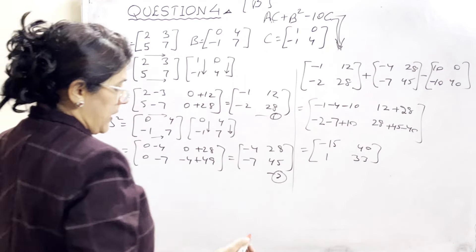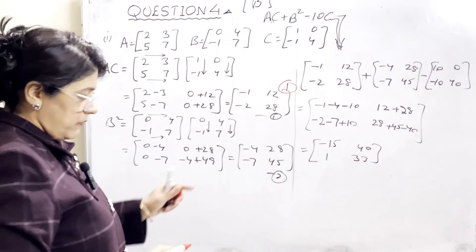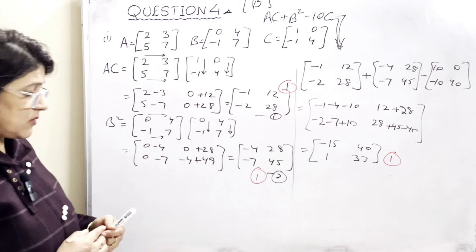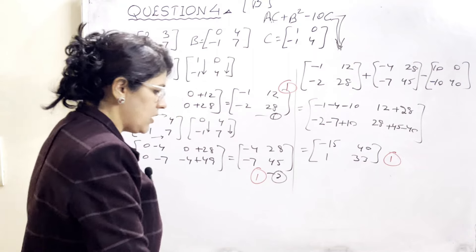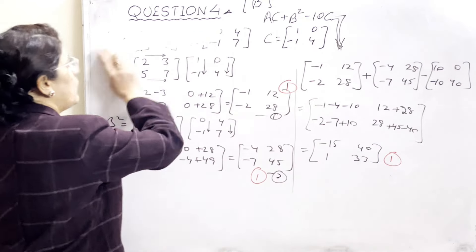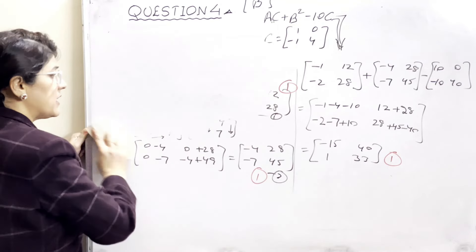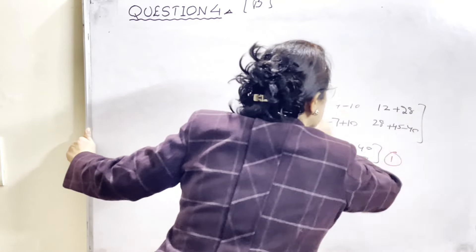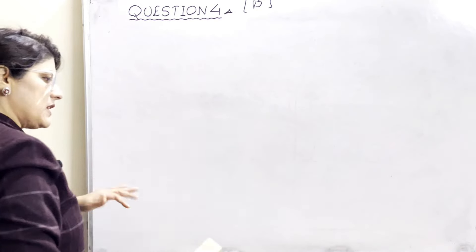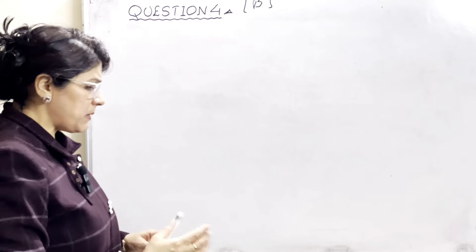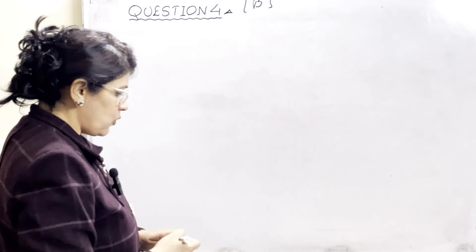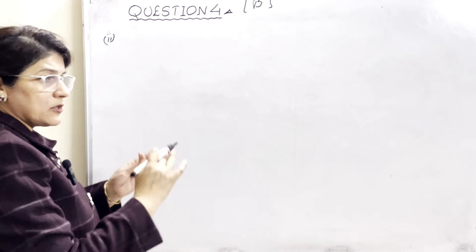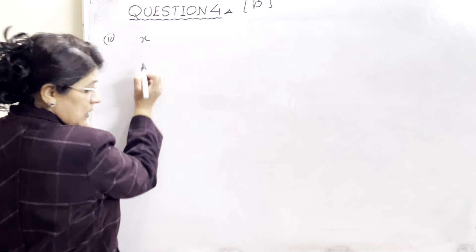Ab Section B mein second part quantity equation mein se liya gaya hai. Ismein aapko two significant figures mein answer dena hai. Two significant figures matlab decimal ke dono taraf ke digits count kar sakte hain. Lekin agar 'correct up to decimal places' kaha ho, toh sirf decimal ke aage wale count karte hain. Is bifurcation ko bahut achhe se samajhna hai, nahi toh poora question sahi hone ke baad bhi last step mein number cut ho jaayega.